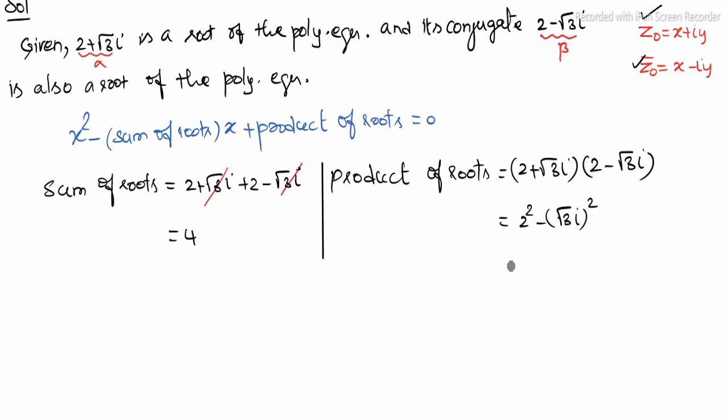So 2 squared becomes 4, root 3 squared is 3, and i squared—we know that i squared equals minus 1. So when we replace i squared with its value, the minus becomes plus. Thus 4 plus 3 equals 7.